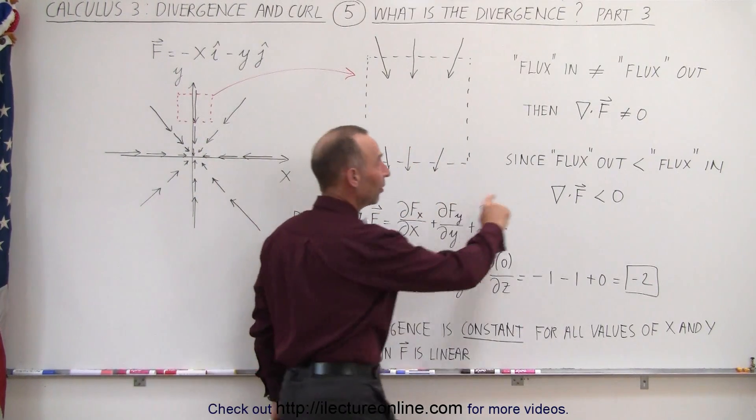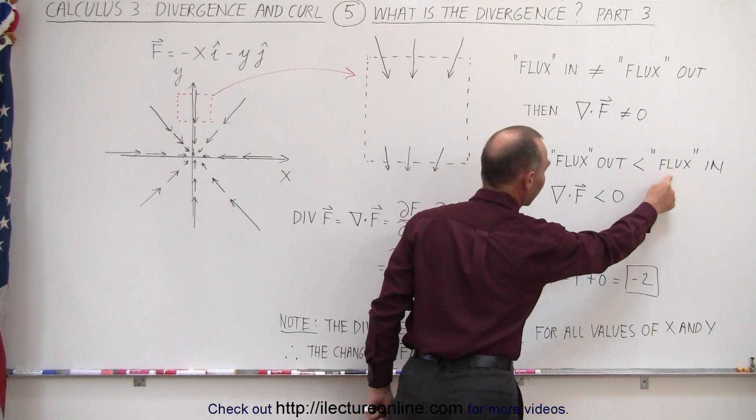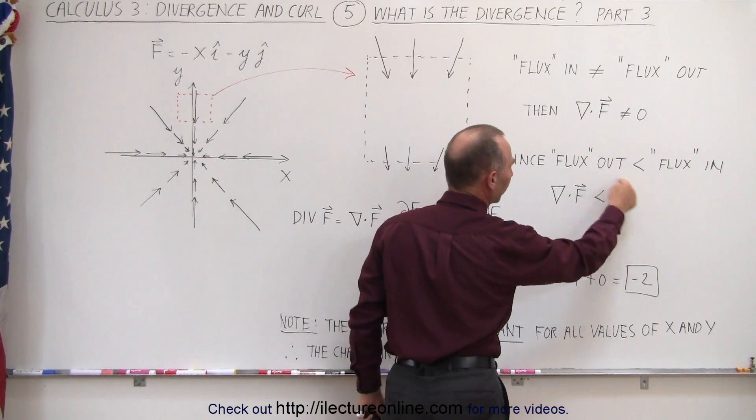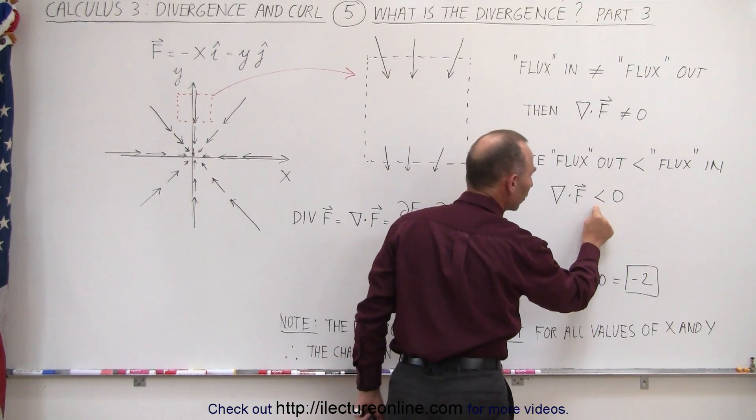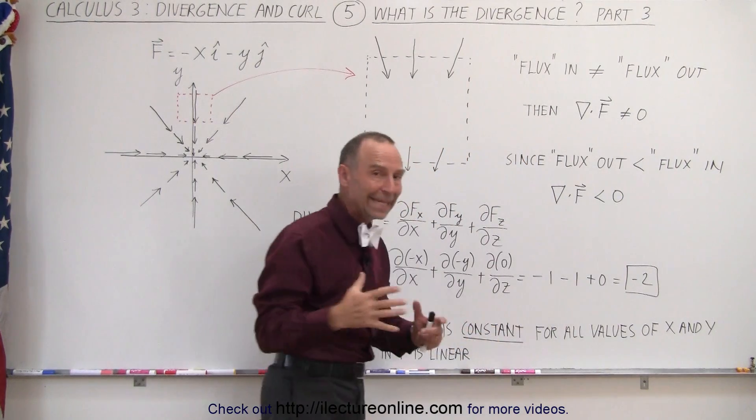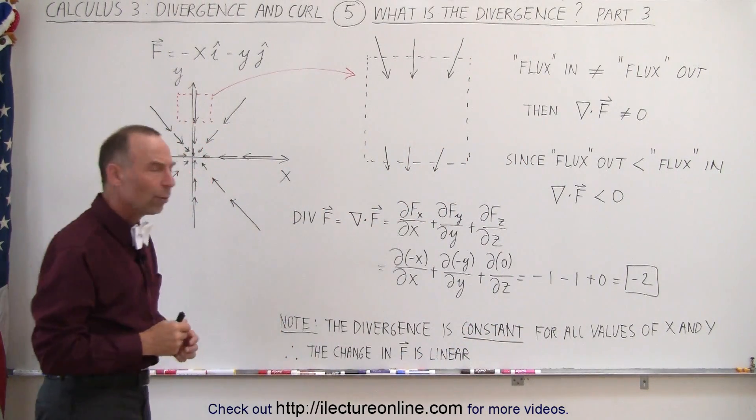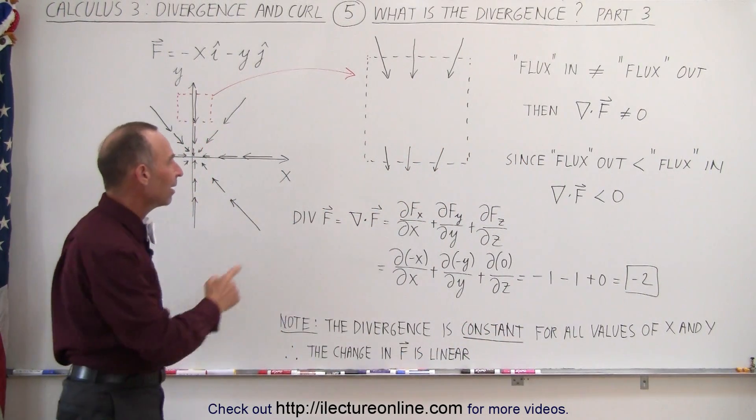And since the flux out is less than the flux in, we can expect that the divergence of that vector field will be smaller than zero, less than zero, or a negative quantity. So when we actually calculate the divergence,